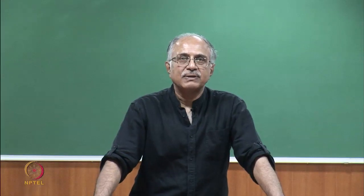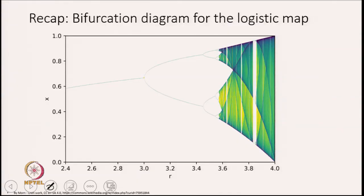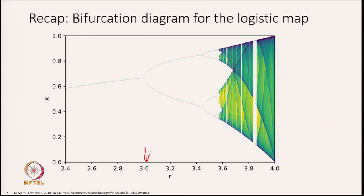The logistic map x_{n+1} = r·x_n·(1 - x_n), where r is the non-linearity parameter. As you vary r, you find that initially period-1 orbits are stable. There is a transcritical bifurcation that happens before we get into this particular frame, at which another period-1 orbit is born, and we go along a particular locus up till r = 3, where there is a period-doubling bifurcation.